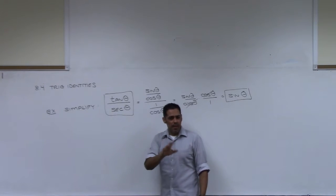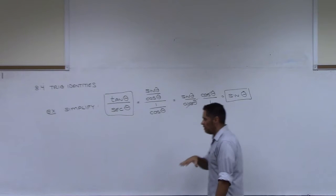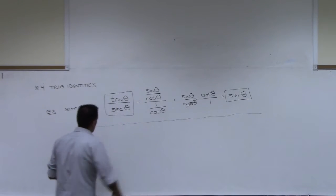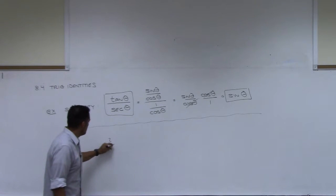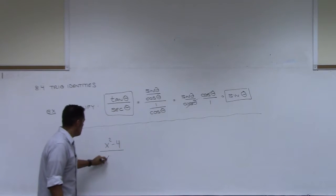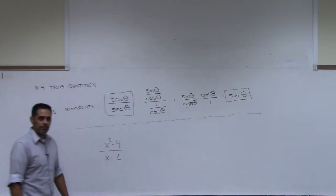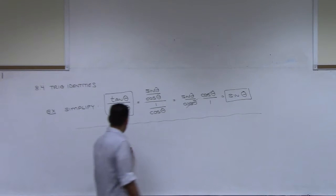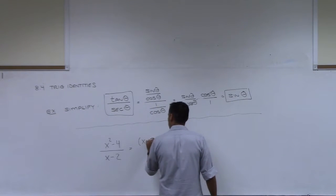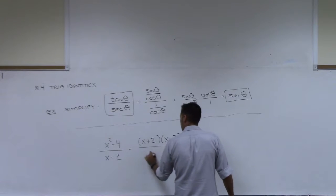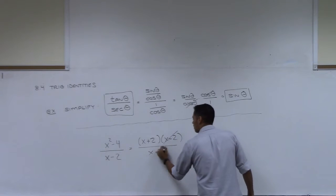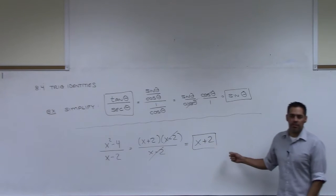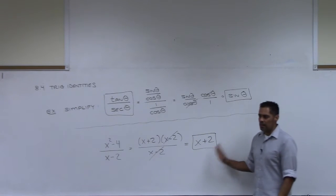I'm going to give you another example — it's something you've seen in algebra before. Do you remember ever seeing something like this: x squared minus 4 over x minus 2? And do you remember difference of squares in the numerator? You factor to get x plus 2 times x minus 2, cancel the factor, and you get x plus 2. So you said that was equal to x plus 2, but it's not exactly equal to this.